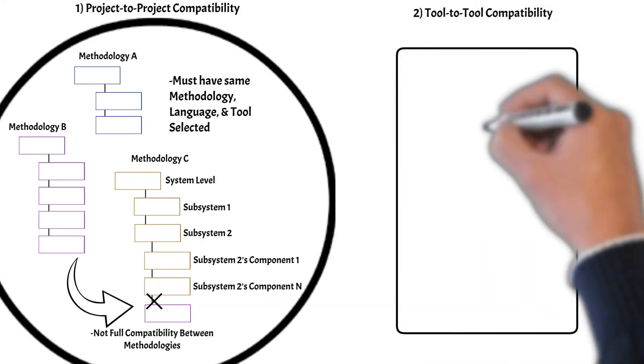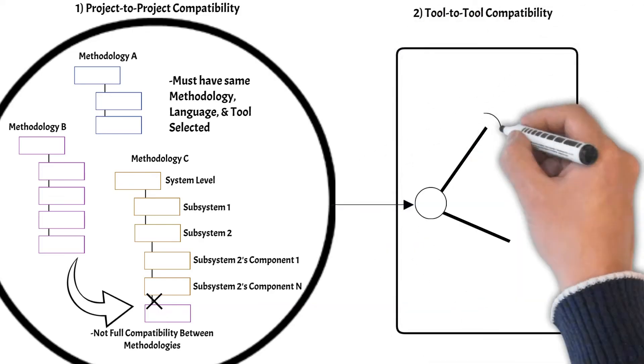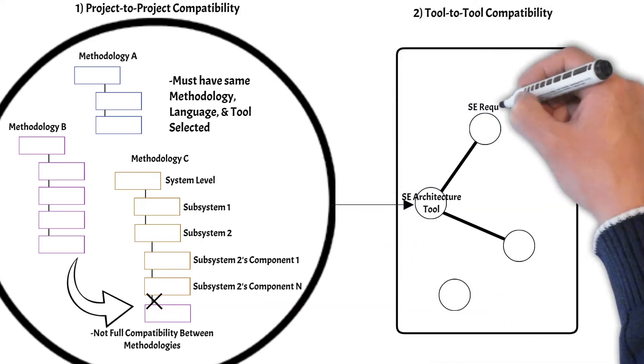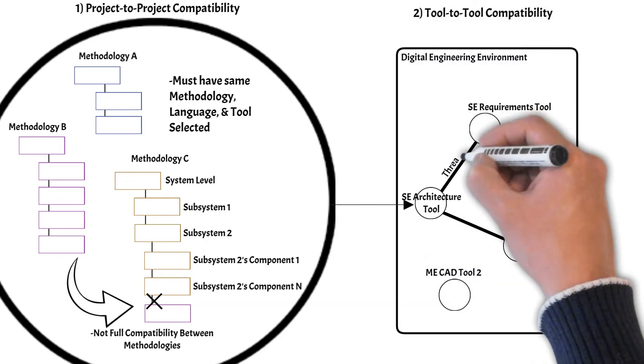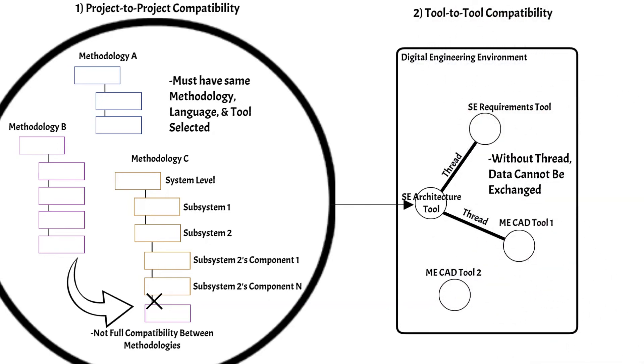Second is tool-to-tool compatibility. The expected data flowing between tools must have the correct mapping, units, and syntax. The digital thread can help with data transformations as necessary but this all needs to be set up manually. Extending the thread and making these inputs and outputs, or hooks, between tools compatible can be difficult and tedious.